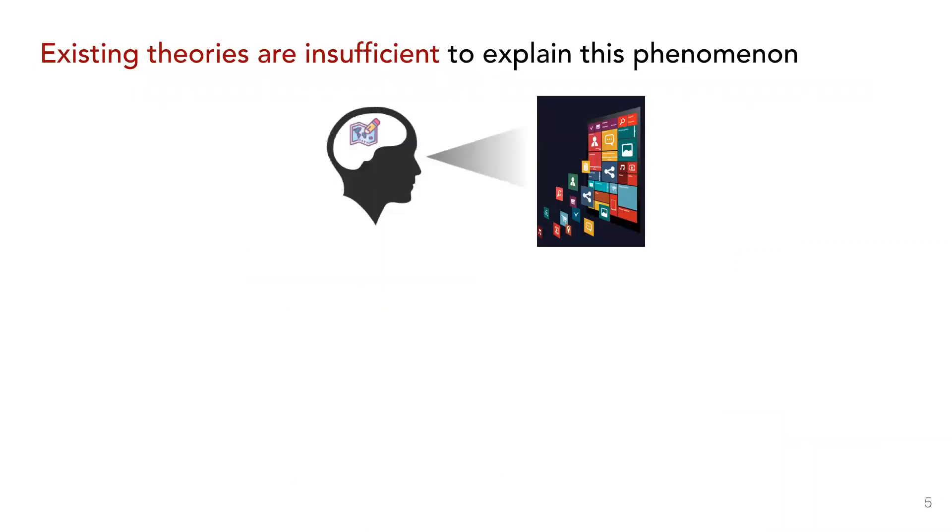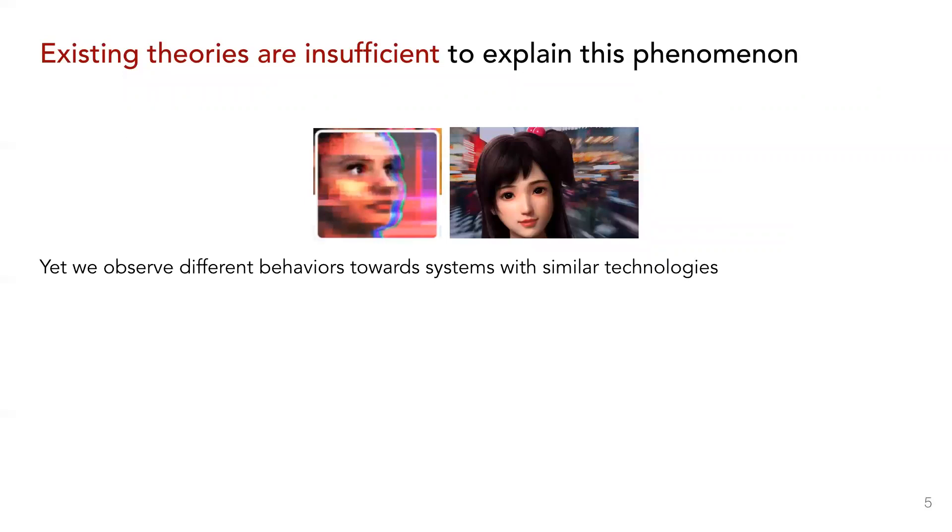Experiences of a system are typically understood as being mediated by a user's mental model of that system, and developing effective mental models can lead to more informed and satisfying interactions. But how do we explain why different systems saw very different reactions, despite having similar underlying technology? This suggests we need additional theoretical scaffolding to understand this phenomenon.